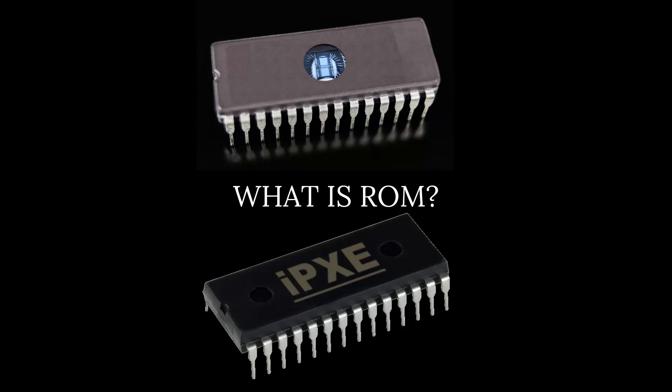ROM is also used to store firmware, which is the software program that remains attached to the hardware or is programmed on a hardware device like keyboard, hard drive, video card, etc. It is stored in the flash ROM of a hardware device. It provides instructions to the device to communicate and interact with all the devices.